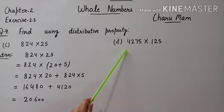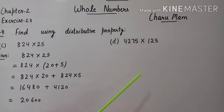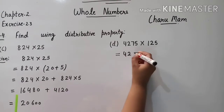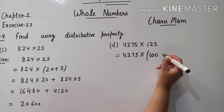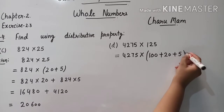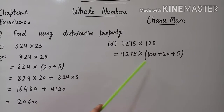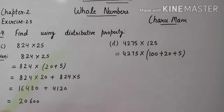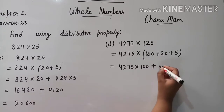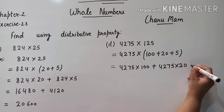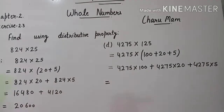Now, question 4 D part: 4,275 multiply 125. इसे भी हम distributed property apply करके solve करेंगे. So, first of all, we write: 4,275 को हम as it is write करेंगे, और 125 को हम simplify करेंगे — इसे हम 100 plus 20 plus 5 की form में write करेंगे. इसे हम distributed property apply करके simplify करेंगे. तो first of all, 4,275 को 100 से multiply करेंगे, then 20 से, then 5 से.